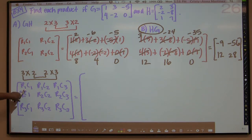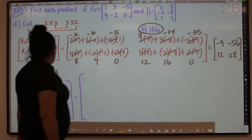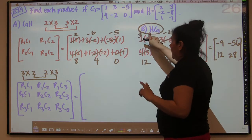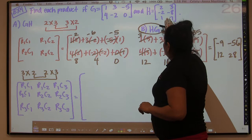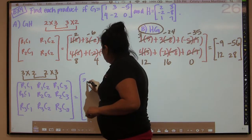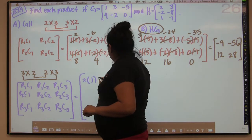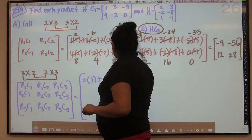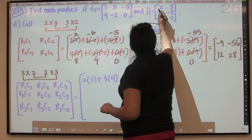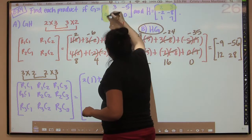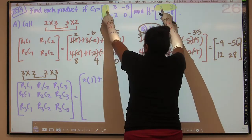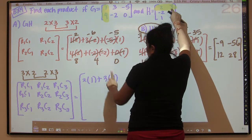But as I was saying, you want to go row one, column one. Remember that we're starting with H first — this is asking us to go backwards. The first one was GH, so I'm going to start with H first. My row one is actually two and three. So I'm going to go two times one plus three times four. We're going row this direction on the H and vertically on the G, so that's why I'm going two times one and three times four.